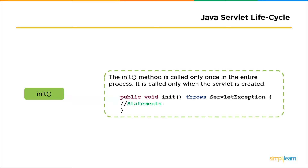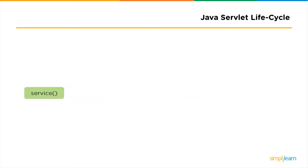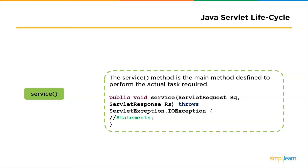Followed by init, we have the service method. The service method is the main method to perform the actual task. The servlet container — that is the web server — calls the service method to handle requests from the client or browser and to write the formatted response back to the client. Each time the server receives a request from the servlet, the server spawns a new thread and calls service. The service method checks the HTTP service type and accordingly performs the CRUD operations — get, post, put, delete, etc.